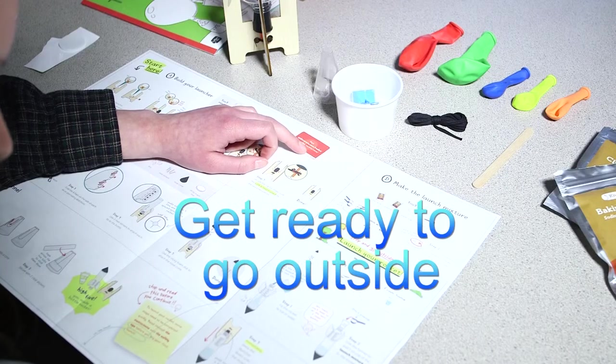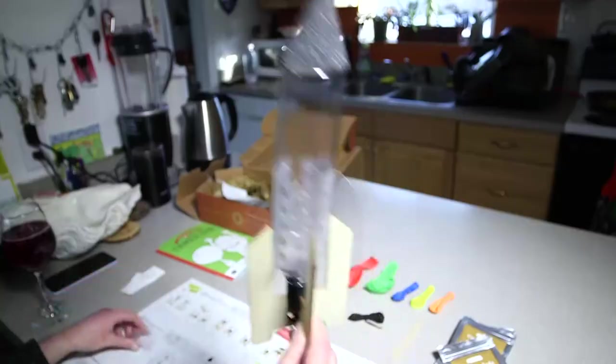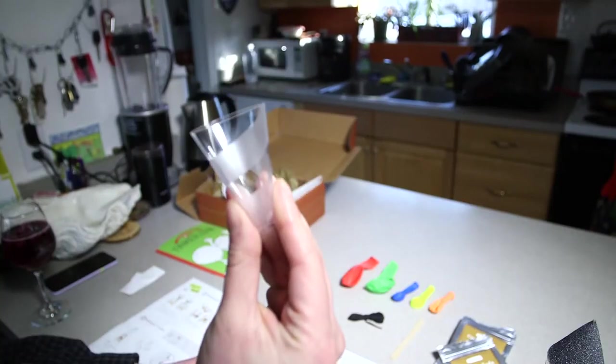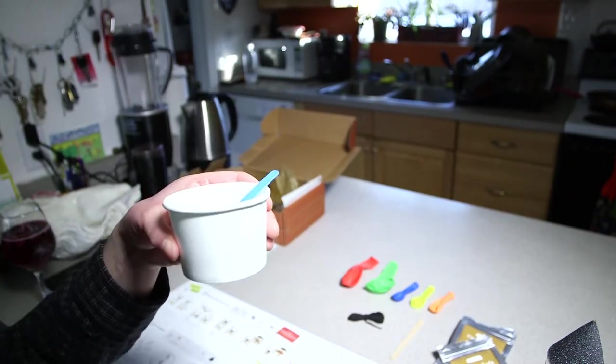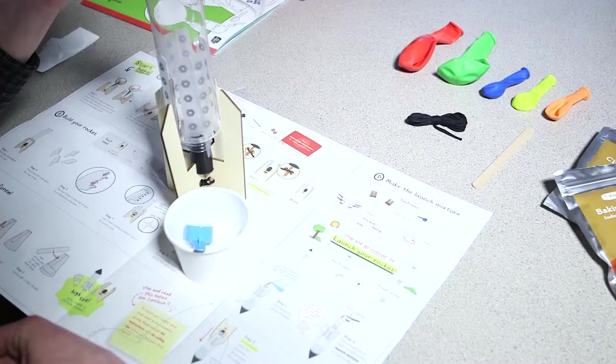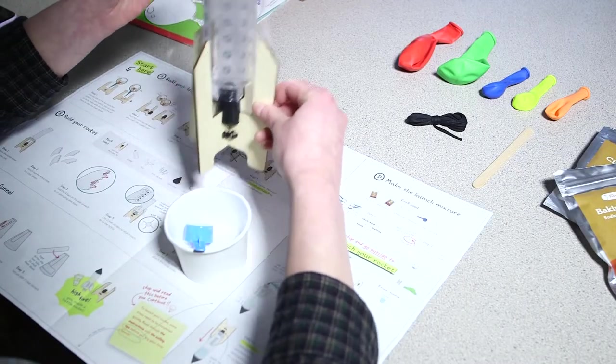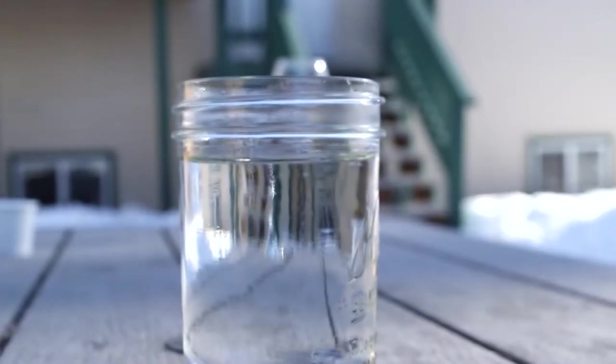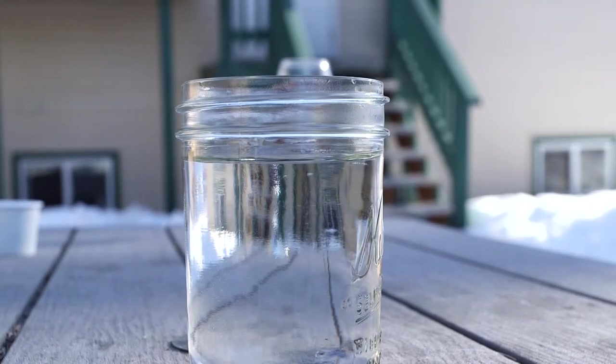Now it's time to go outside. We're going to need to grab the rocket, the funnel from part C, one scoop of launch mixture from part D, the completed launcher from part A, and don't forget your glass of water from home.